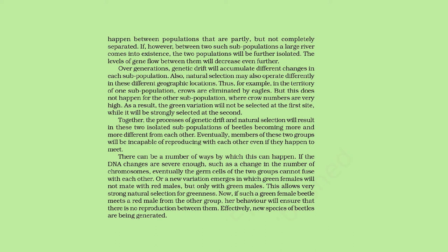Eventually, members of these two groups will be incapable of reproducing with each other even if they happen to meet. This can happen in a number of ways. If the DNA changes are severe enough, such as a change in the number of chromosomes, the germ cells of the two groups cannot fuse with each other. Or, a new variation might emerge in which green females will not mate with red males but only with green males, allowing very strong natural selection for greenness. If such a green female mates with a red male from the other group, her behaviour ensures no reproduction between them. Effectively, new species of beetles are being generated.